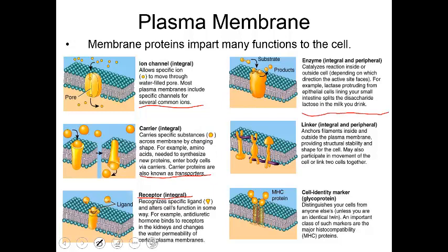The next type of protein, which can be either a transmembrane or surface protein, is a linker. A linker protein usually participates in some kind of anchoring mechanism between two cells — they function in cell junctions and help with bonding cells together. The next type, a glycoprotein, is cell identity markers, also known as major histocompatibility proteins, or MHCs. These proteins distinguish between self versus non-self, surveying your body and recognizing what is part of your own body versus what is foreign. Anything foreign you want your body to get rid of, but not your own cells — that would lead to autoimmune disorders.